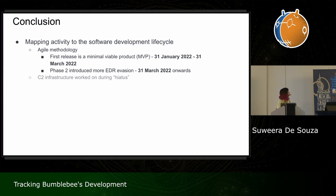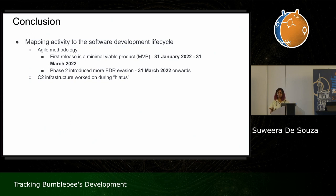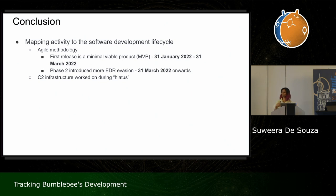We also noticed the developers seem to focus on C2 infrastructure during hiatus periods — they're not really on a break, they're more on a break from distribution. This makes sense because if you're going to change your backend, you want to distribute malware that can communicate with your new infrastructure. It's also a flag for us when the malware goes quiet, because then we know they're up to something.